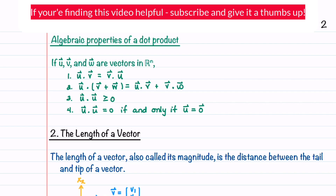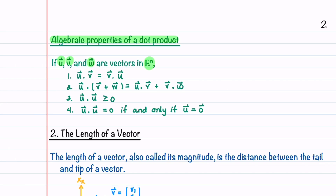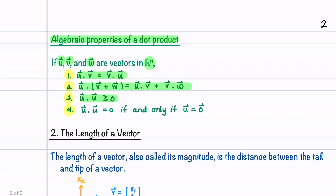Let's quickly go over some algebraic properties of dot products. If u, v, and w are vectors in Rn: first, u dotted with v equals v dotted with u — the order doesn't matter. Second, the dot product is distributive. Third, the dot product of a vector with itself is always greater than or equal to zero, because each component gets squared. Fourth, the dot product of a vector with itself equals zero if and only if the vector is the zero vector.